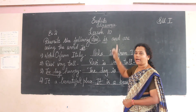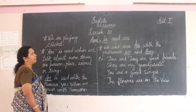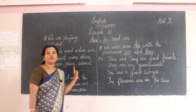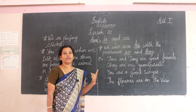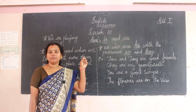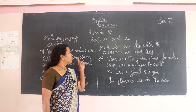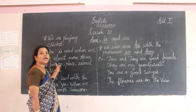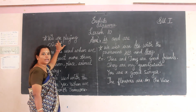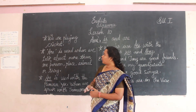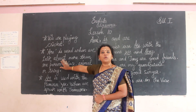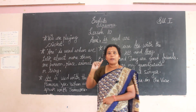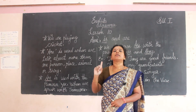Now let us see 'are'. We are going to see where to use 'are'. In 'is' we used singular — one person, one place, one animal. Now 'are' is used when we talk about more than one person. The first condition: it should be plural.